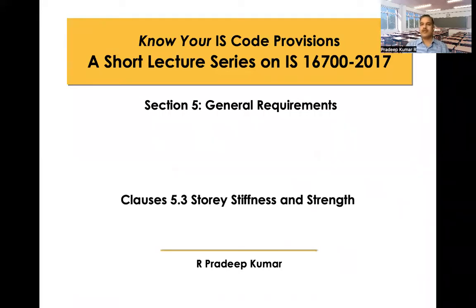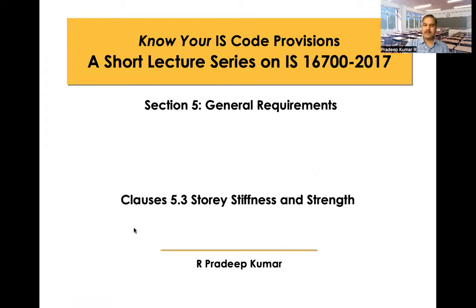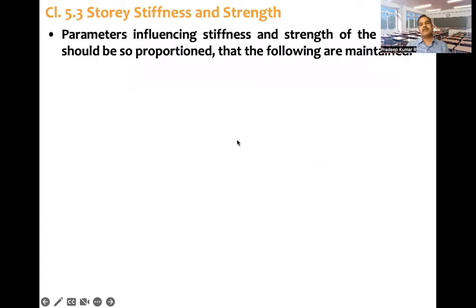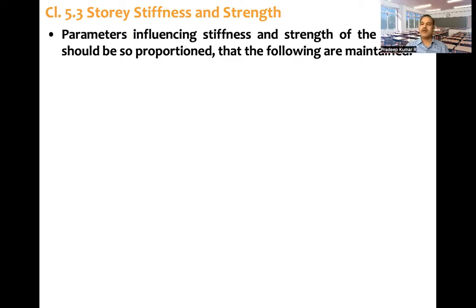Clause number 5.3 — story stiffness and story strength. What the code directly says is: parameters influencing stiffness and strength of the building should be so proportioned that the following are maintained.